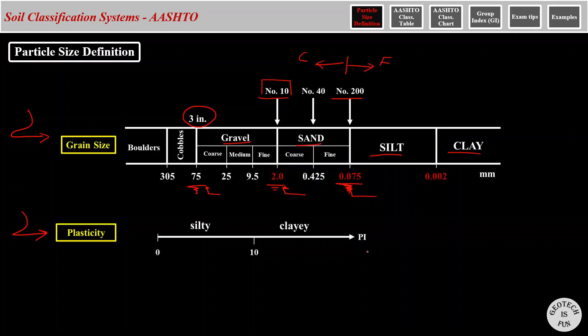AASHTO divides clay and silty soils based on their plasticity index. PI is the boundary between these two materials. I've also seen in some references and some state DOTs that these two materials are also divided based on their grain size, and 0.002 mm is defined as the boundary of them.